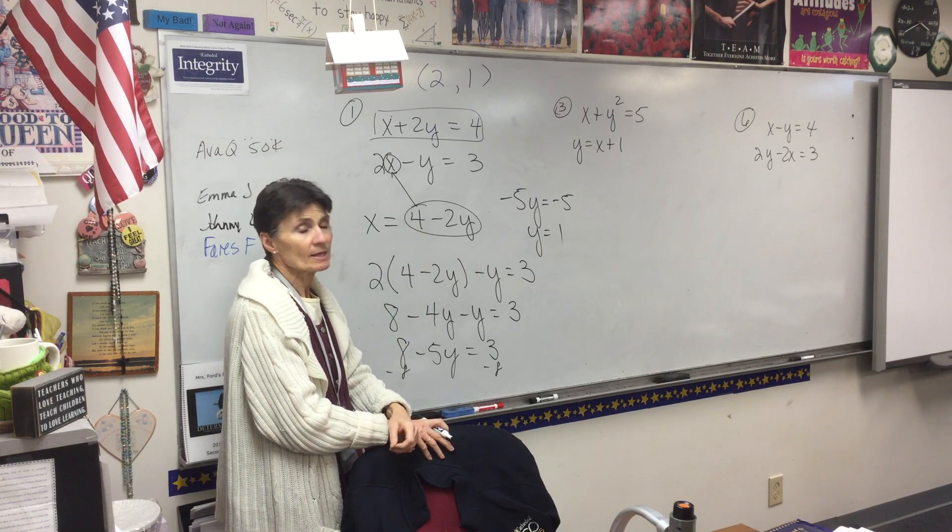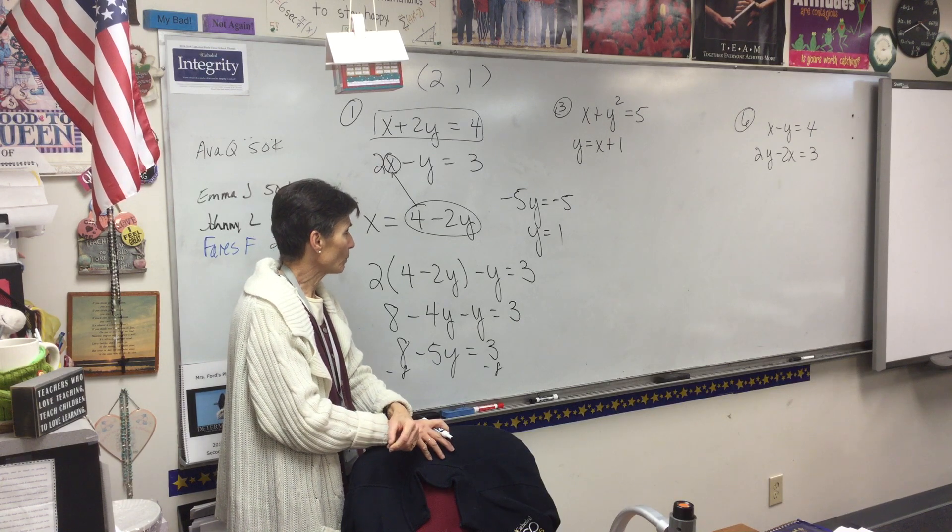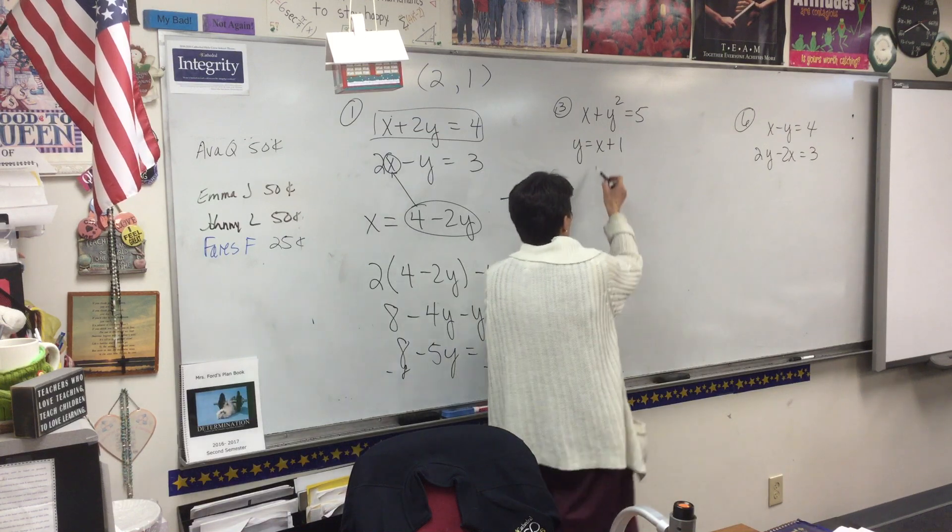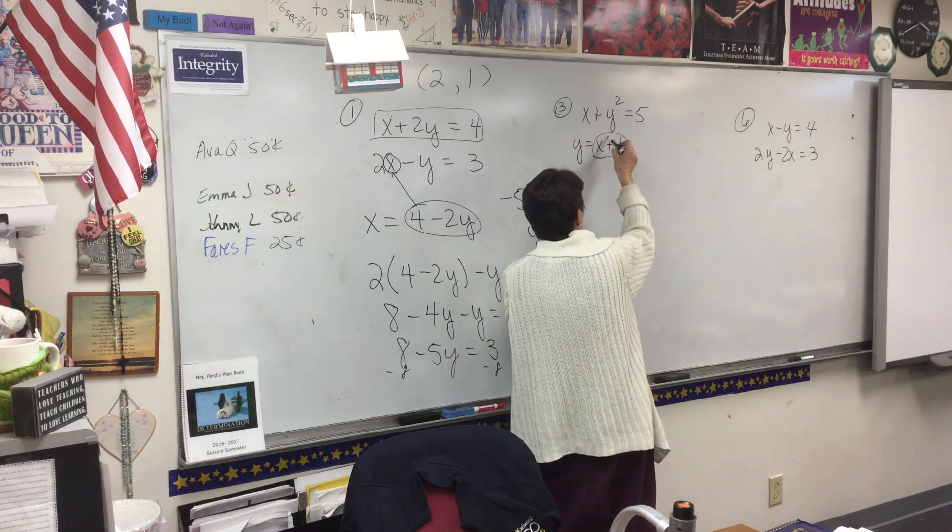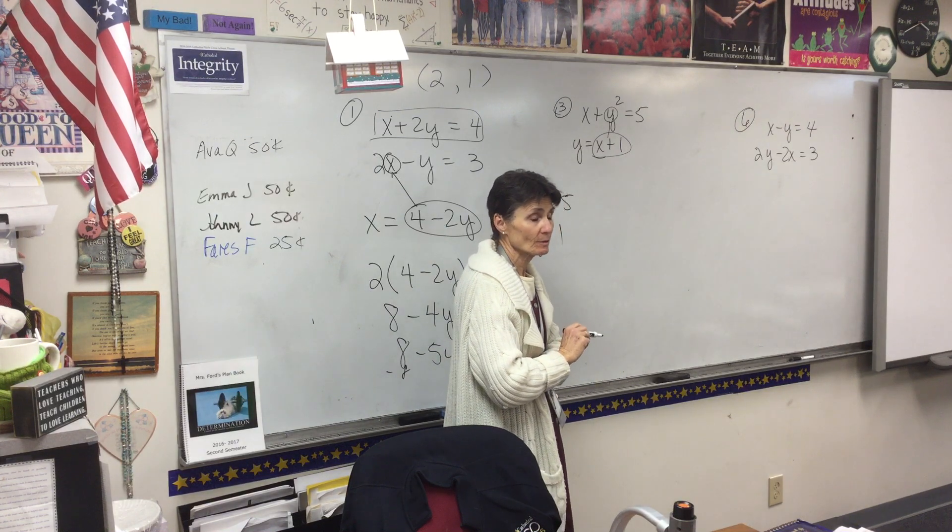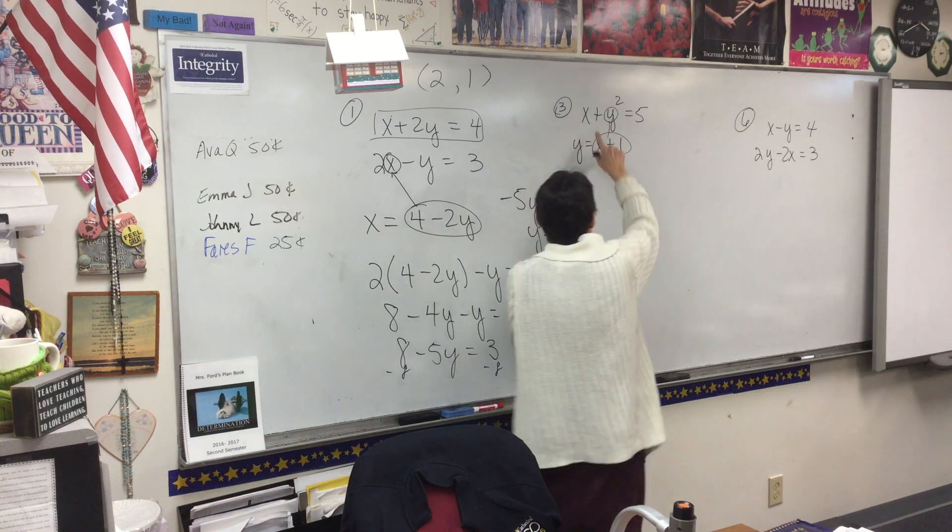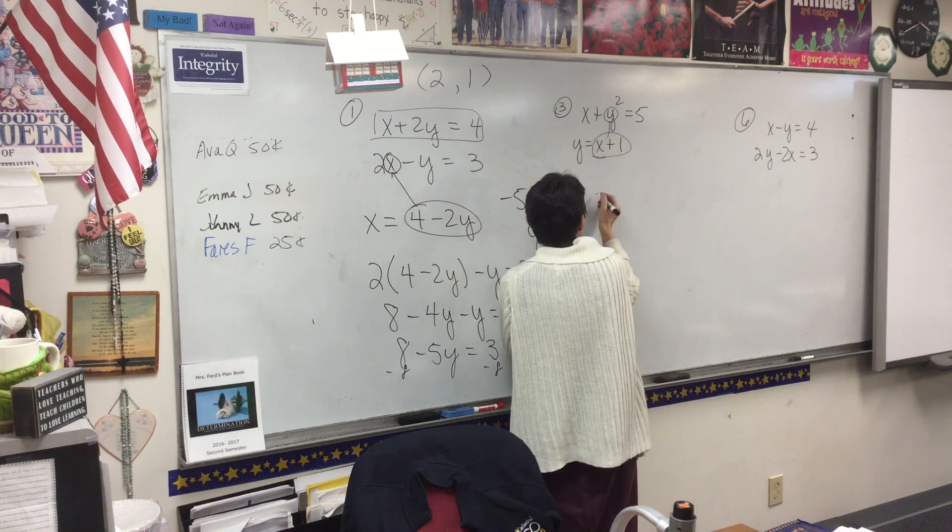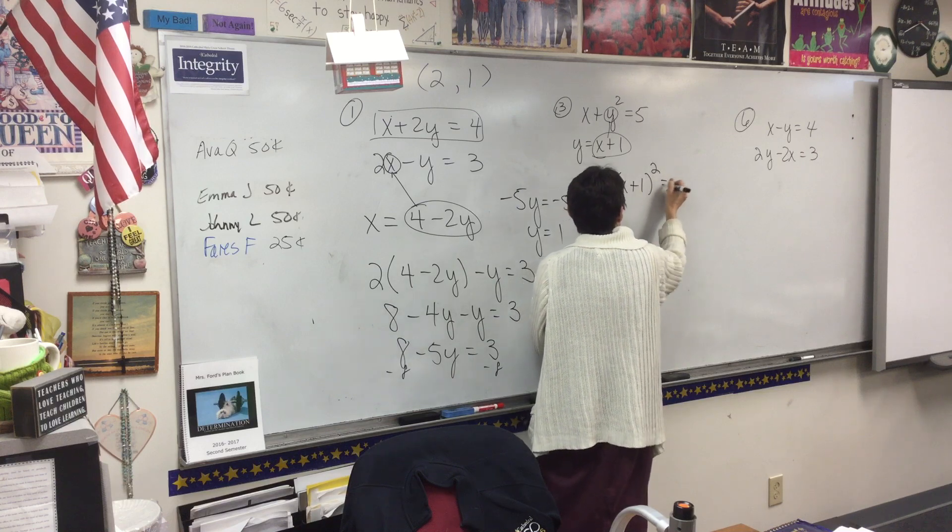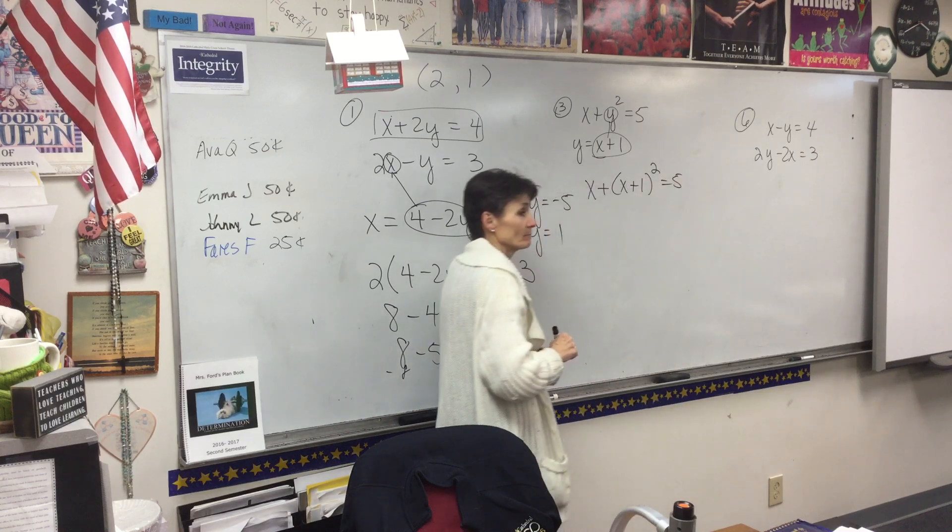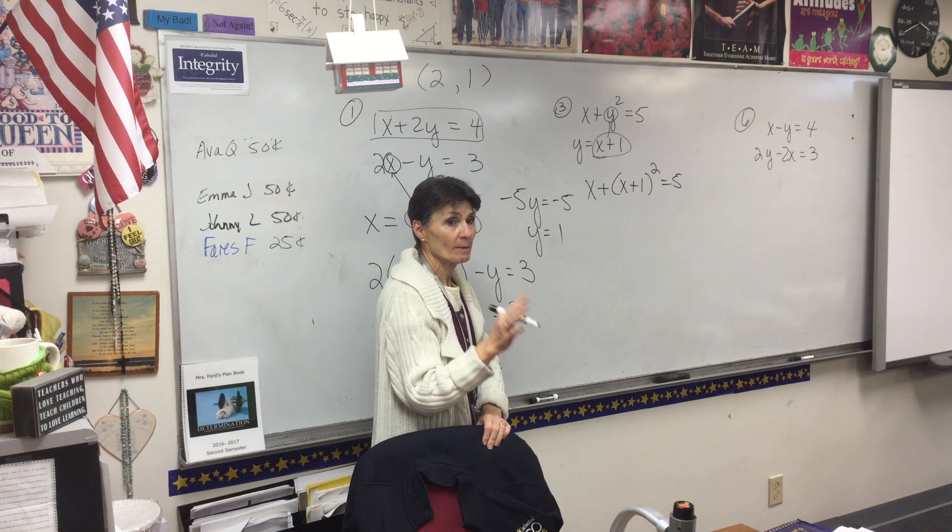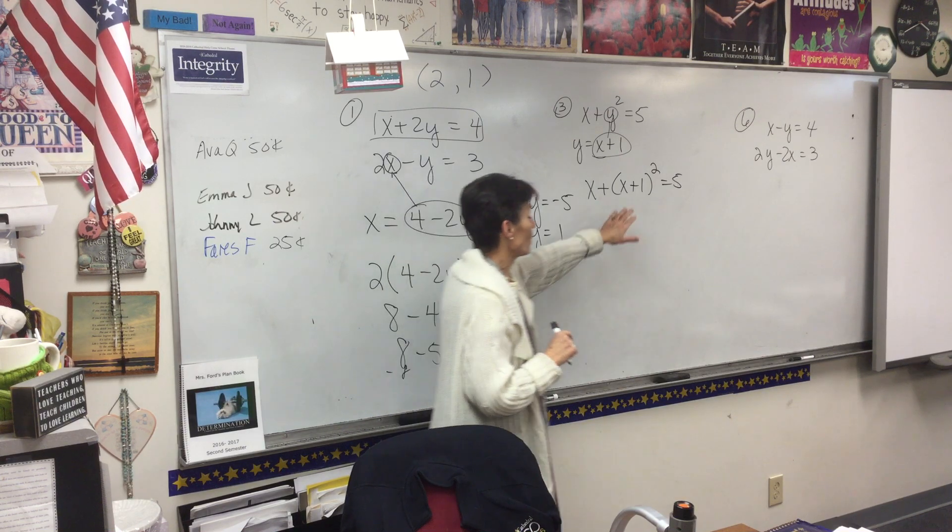It's the same thing, but it's got a squared in it, so it's going to be a little bit more arithmetic. But the process is the same. And in fact, isn't this set up beautifully for substitution right now? Directions say substitute. So that top equation, if I plug this in, it's going to say x plus x plus 1 squared equals 5. Everybody okay with that?